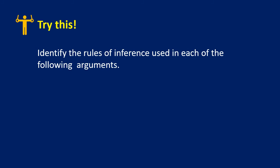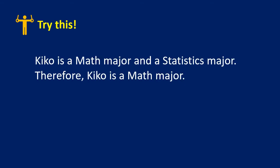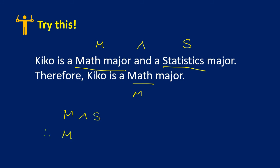Let's identify the rules of inference used in each argument. First: 'Kiko is a math major and a statistics major. Therefore, Kiko is a math major.' Writing it in form: M and S; therefore M. This is simplification. Second: 'If John stayed up late last night, then he will be sleepy in class. John stayed up late last night. Therefore, he will be sleepy in class.' This is modus ponens.